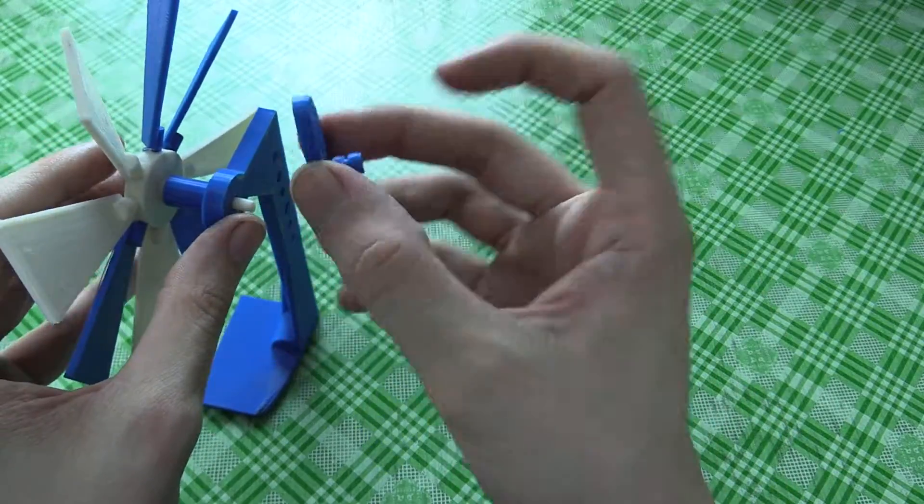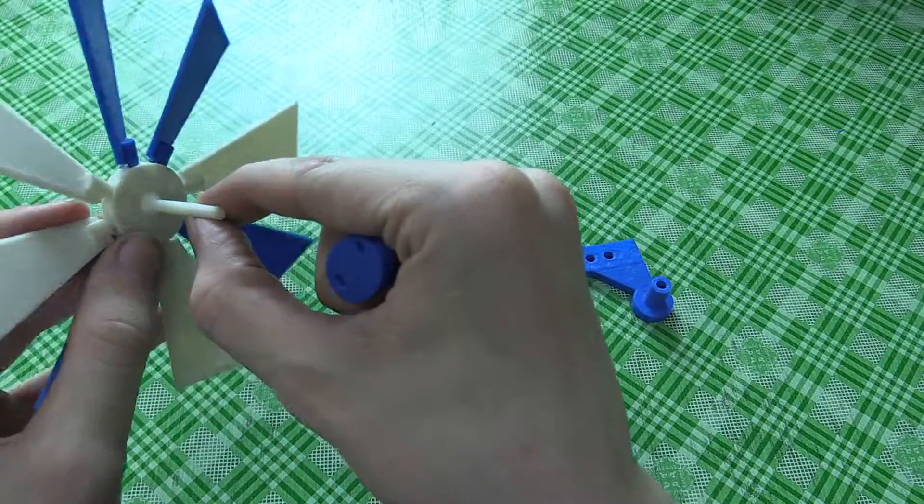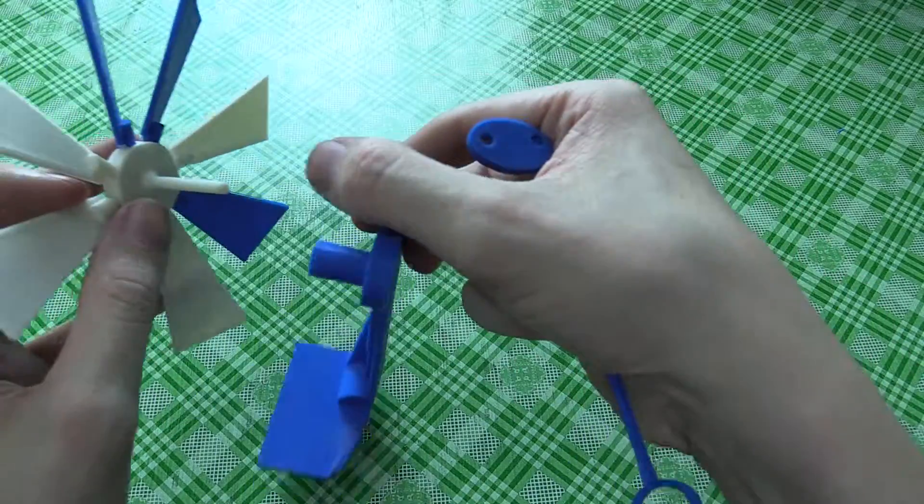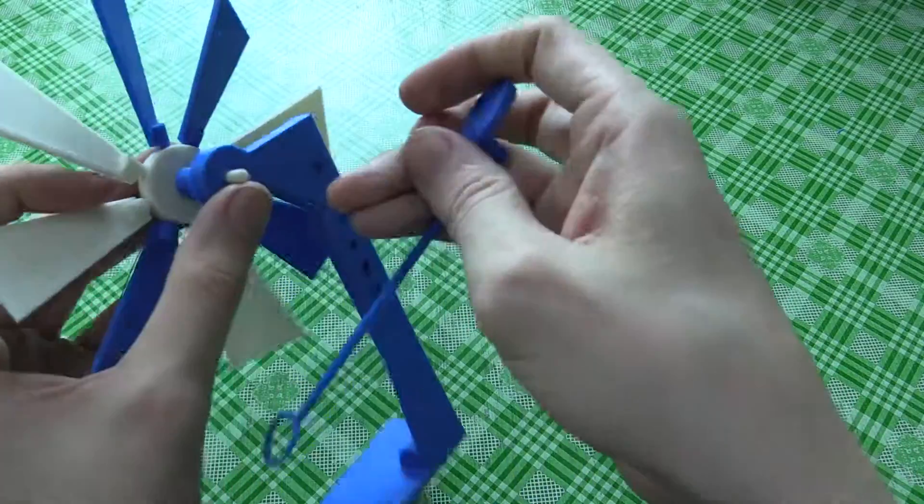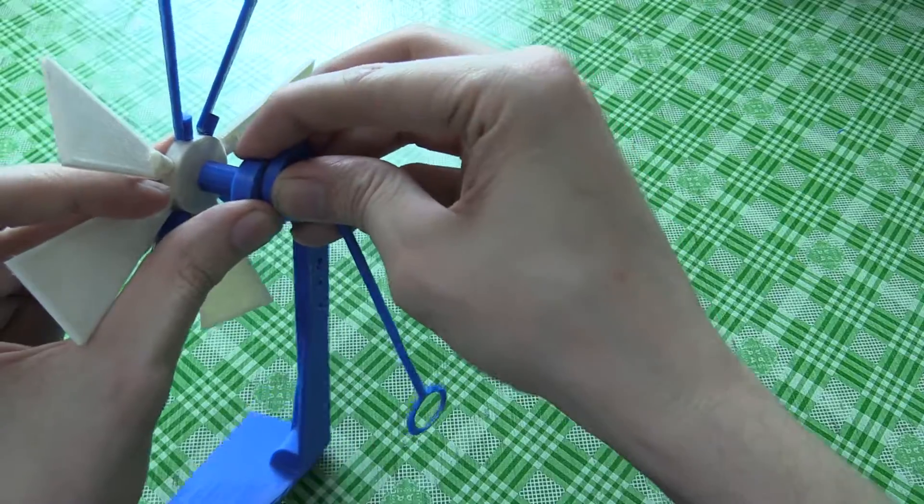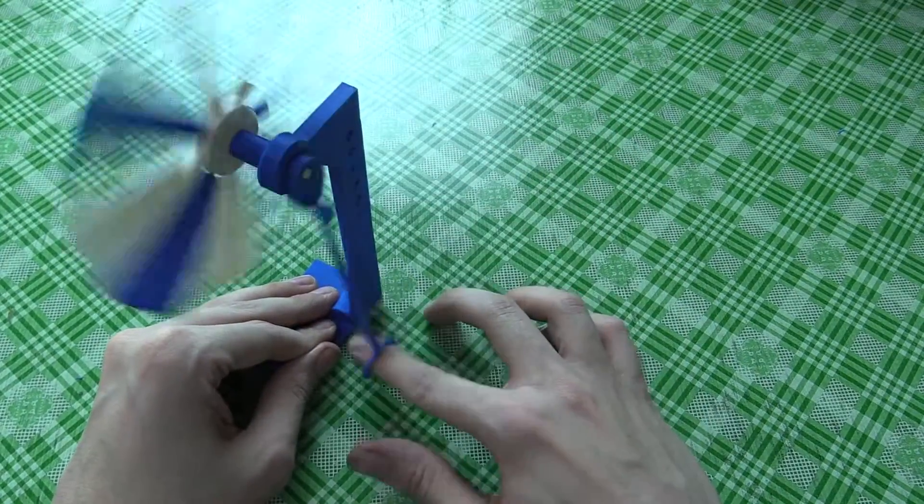And then this is the bit where you have to be careful joining this to this. Now this pole is only around three millimeters. Maybe a tiny bit more with the shell. So you have to be very careful when you're joining these parts so you don't snap this beam. So push that on there. And there you go. Your fan is ready to spin.